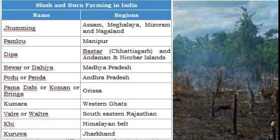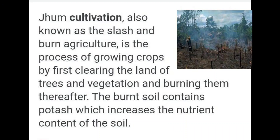Zoom cultivation is done to meet the needs of the farmer and his family. Farming takes place for 2 or 3 years and when soil fertility is reduced, that area is abandoned and that same method is applied to start farming at another place.